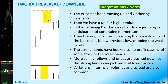Then the selling comes in, pushing the prices down, and the bar closes below the previous low, trapping the weak hands. The strong hands have booked some profit, passing off some stock to the weak hands. More selling follows and the prices are pushed down so the strong hands can pick up more at lower prices.